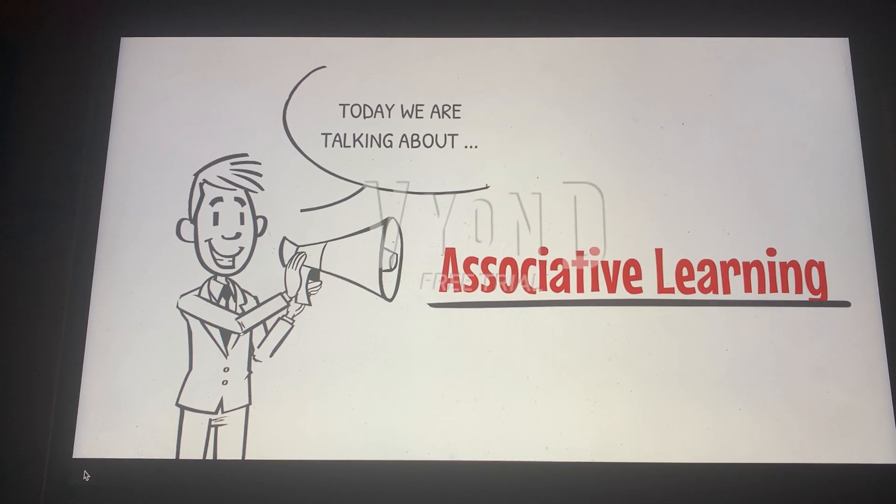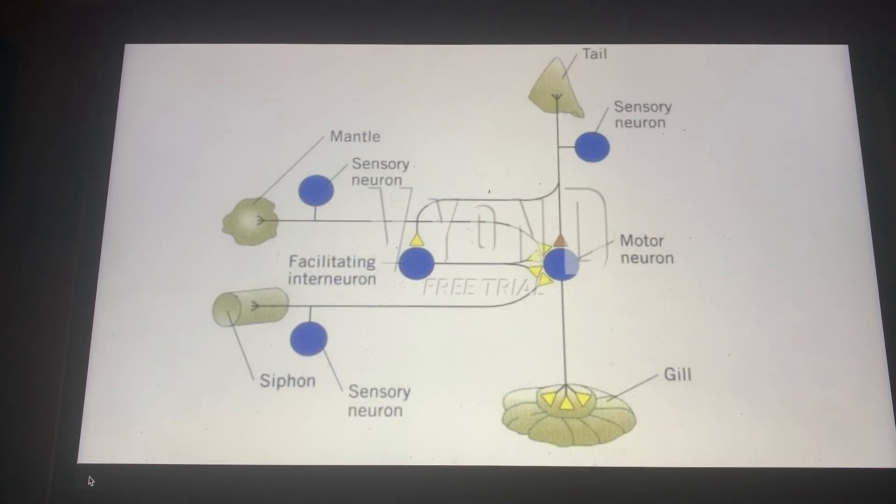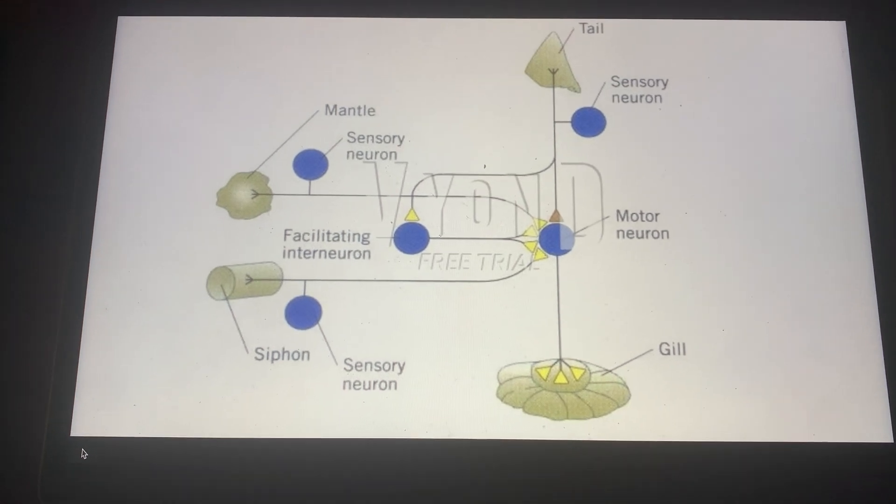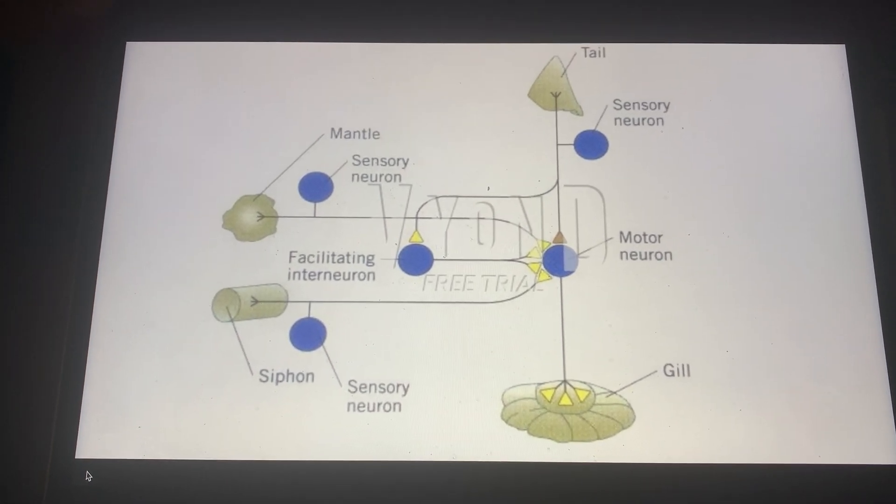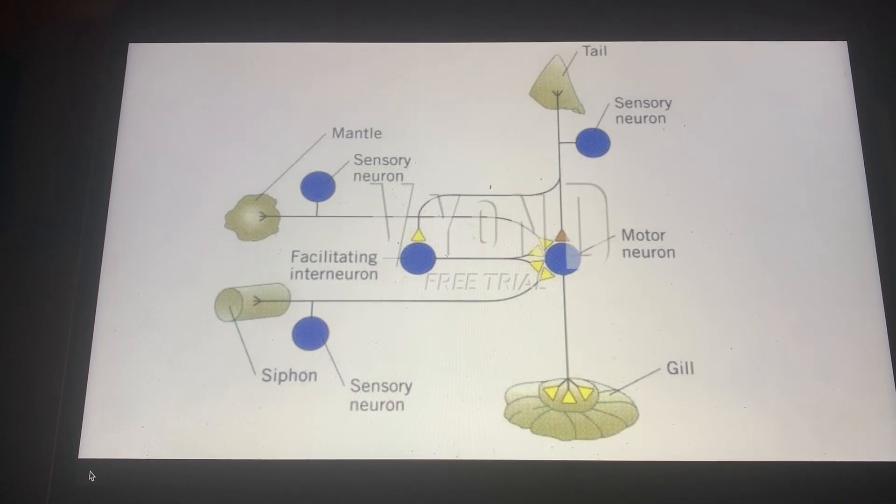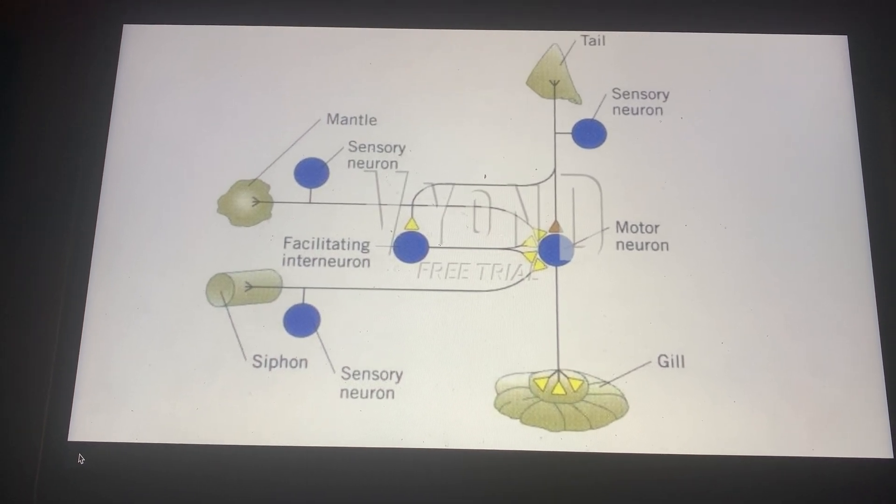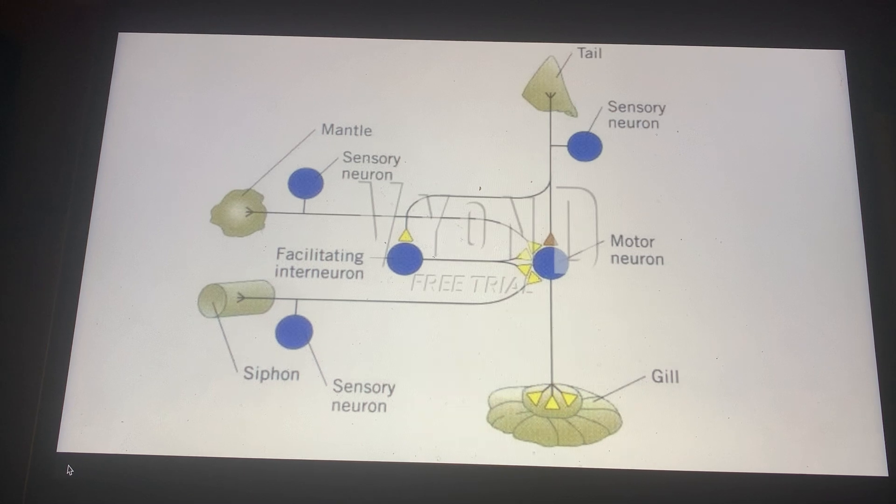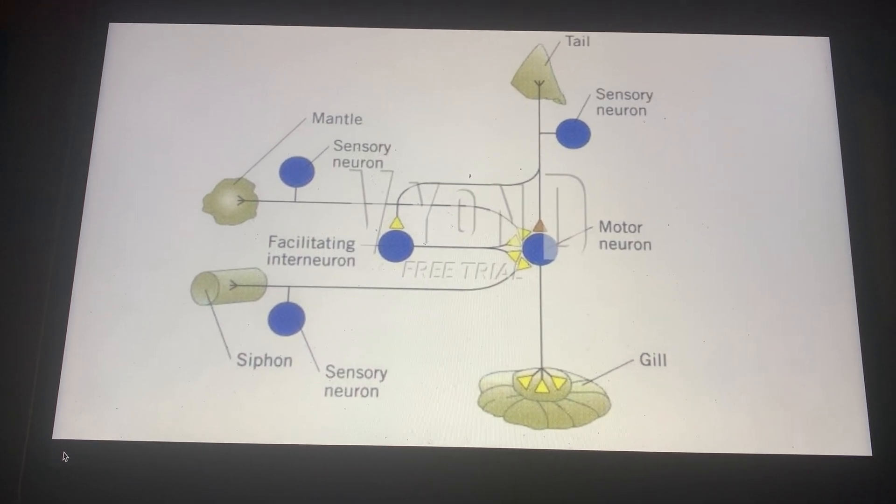The idea of associative learning is pairing two stimuli: one that is aversive versus one that isn't that bad. The understanding is when you pair these two stimuli, the non-aversive one becomes aversive because you paired it with an aversive stimulus.